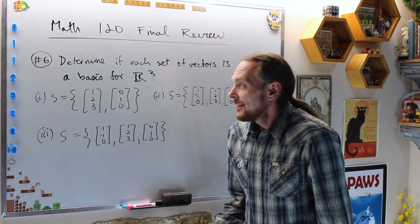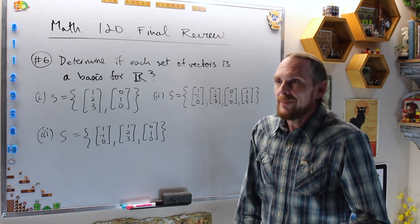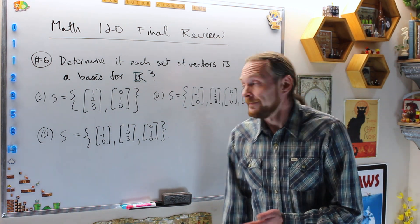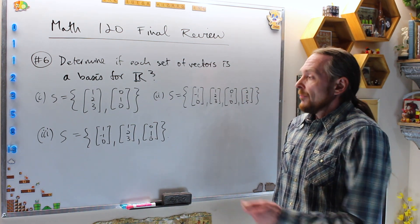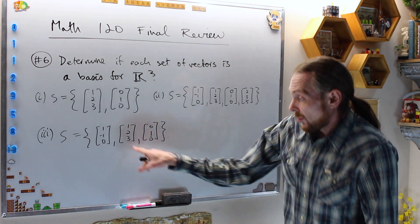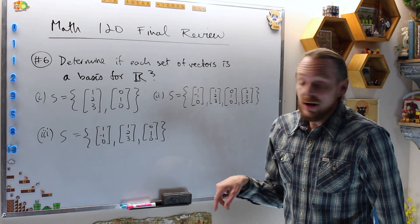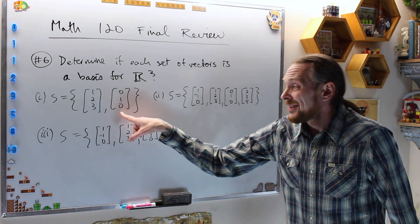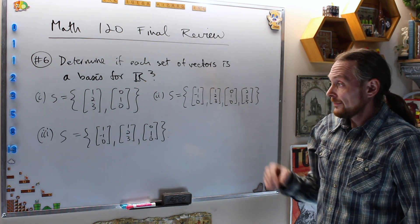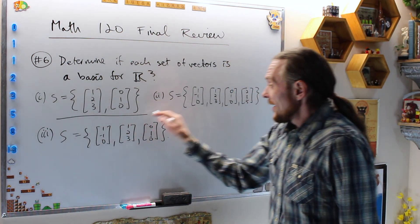Number 6 asks us to determine if each set of vectors is a basis for R³. On the final exam you need to know what a basis of n dimensions is — it has to be linearly independent and spanning. Specifically, I have one of each case: the anti-Goldilocks land where the number of vectors matches the dimension, less vectors than the dimension, or more vectors than the dimension.